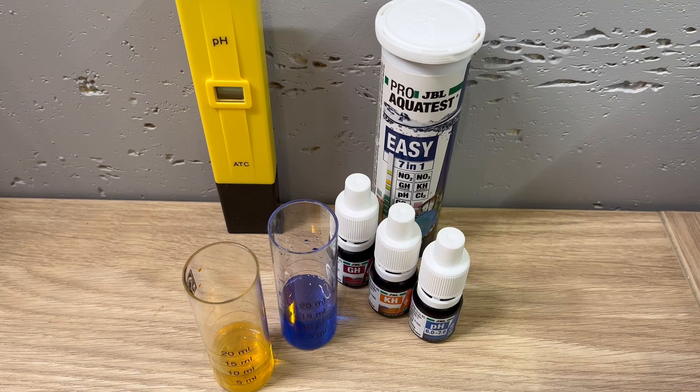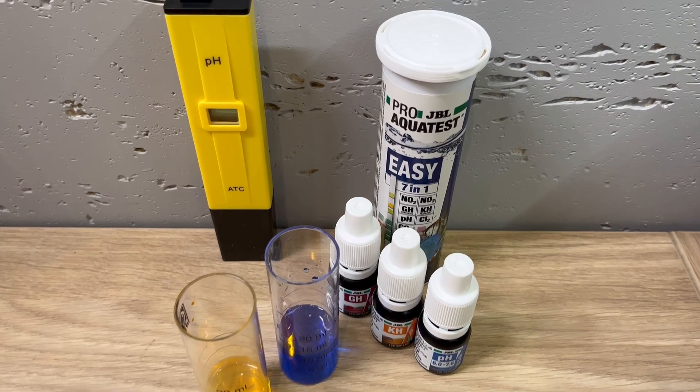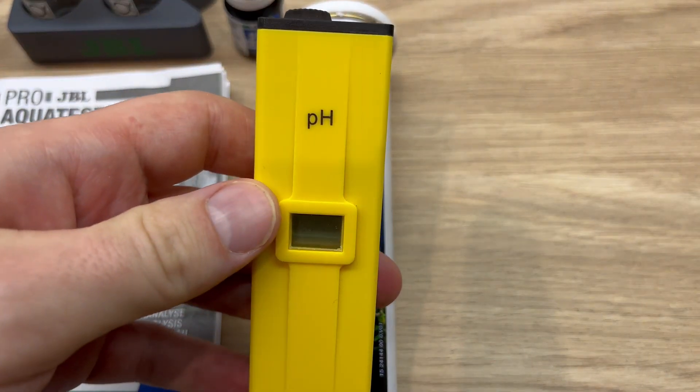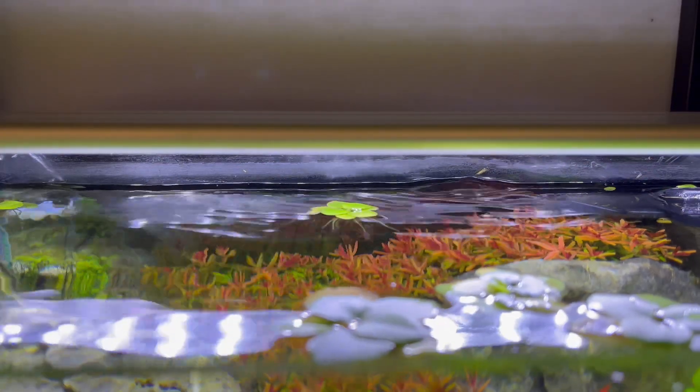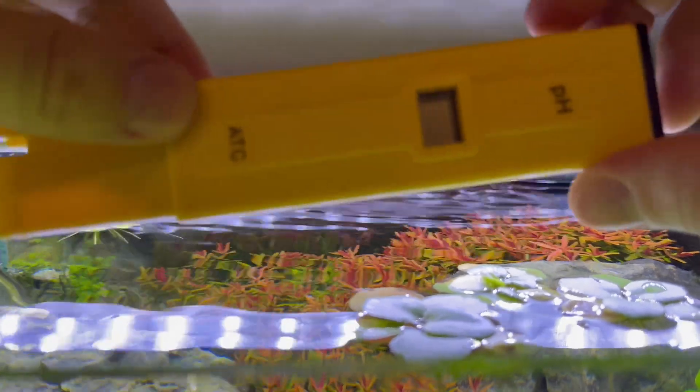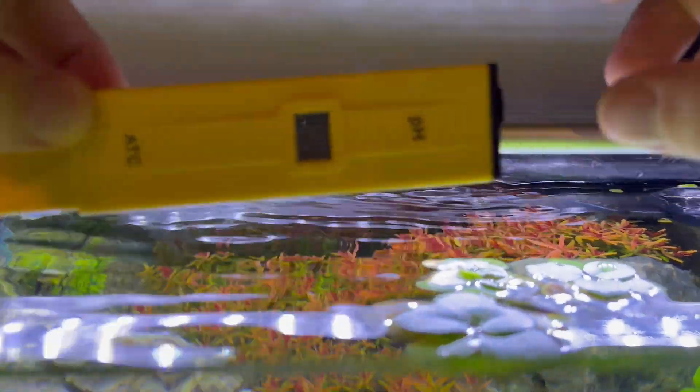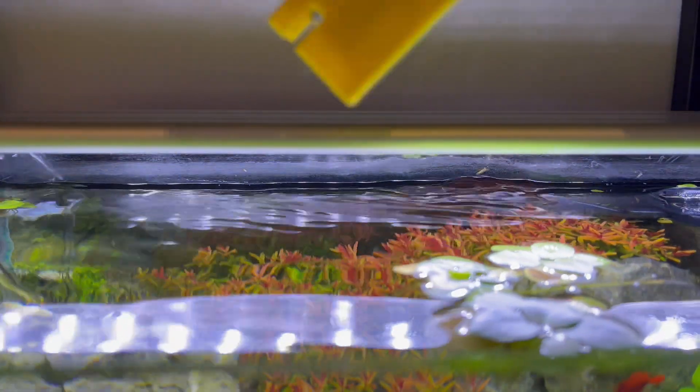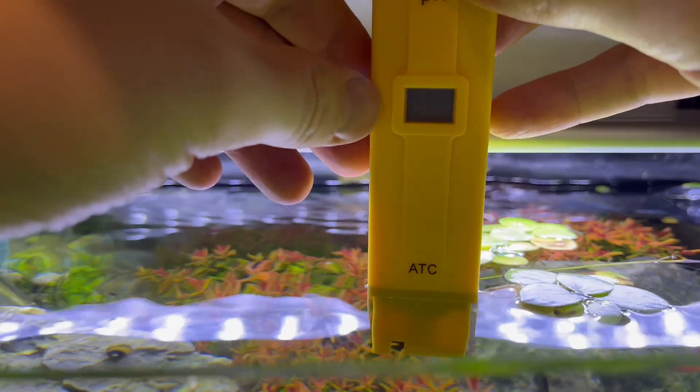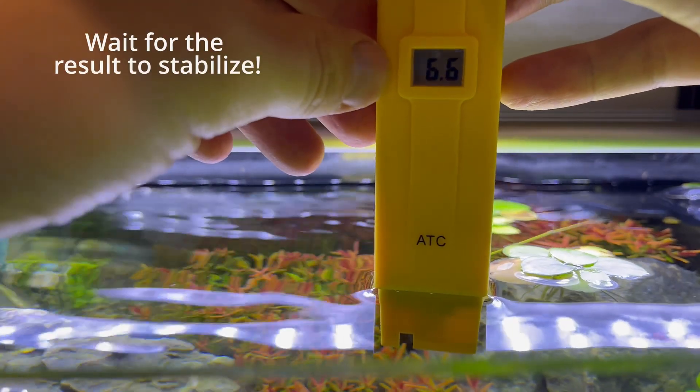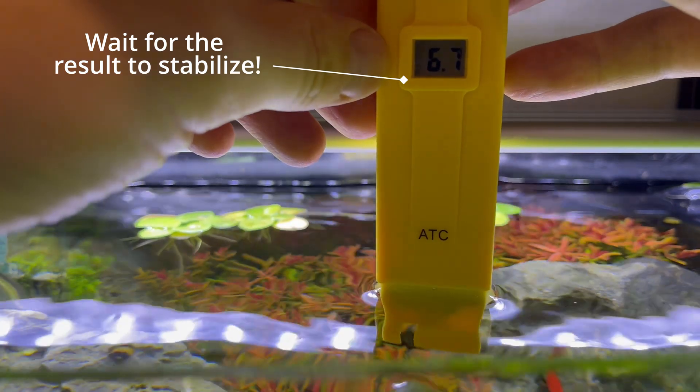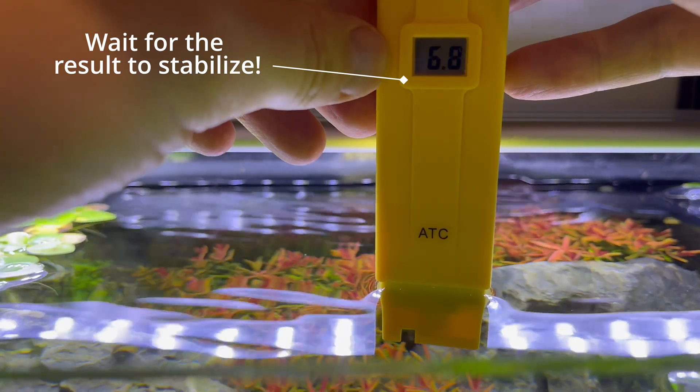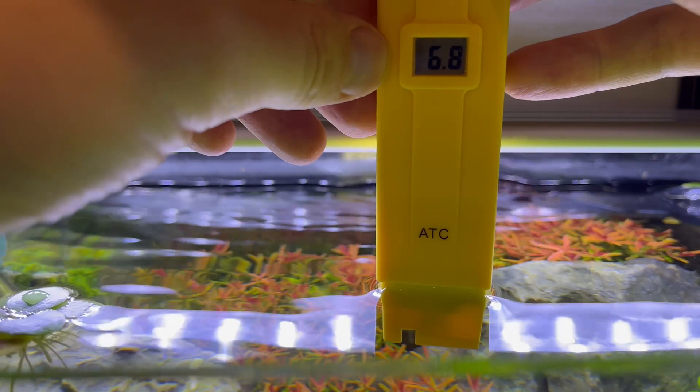To test pH in your water, you have basically three options. Let me start from the fastest one, which is with that kind of device. This is electronic meter for pH. So to measure your pH, you have to put the end of this device into your tank and wait for a few seconds. You can see that the number is starting to show, but it's quite unstable at the very beginning. So you have to wait a few seconds until the number stabilizes.